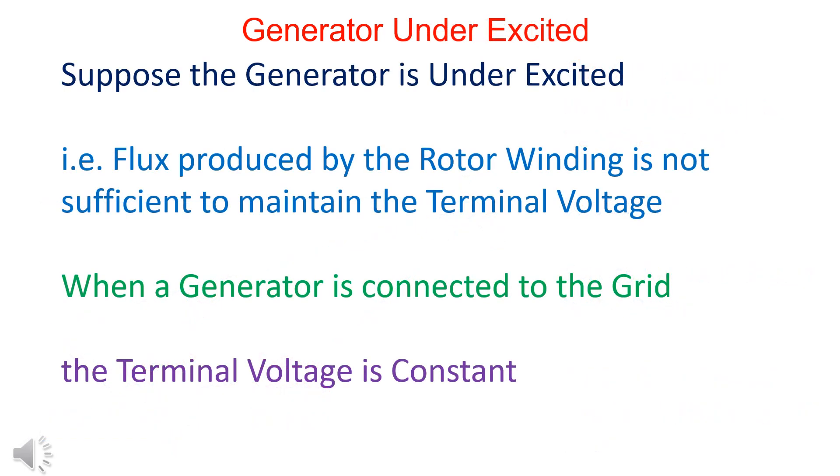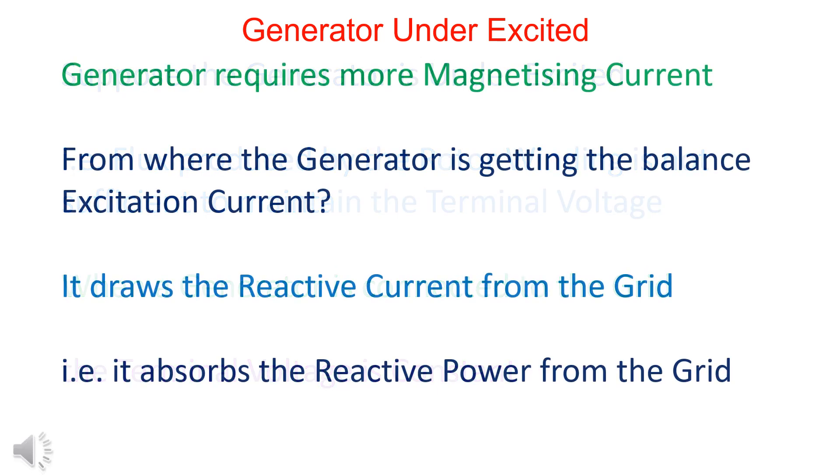In the under-excited generator, sufficient magnetizing current is not available to maintain the terminal voltage. It draws the required magnetizing current, that is reactive power, from the grid.